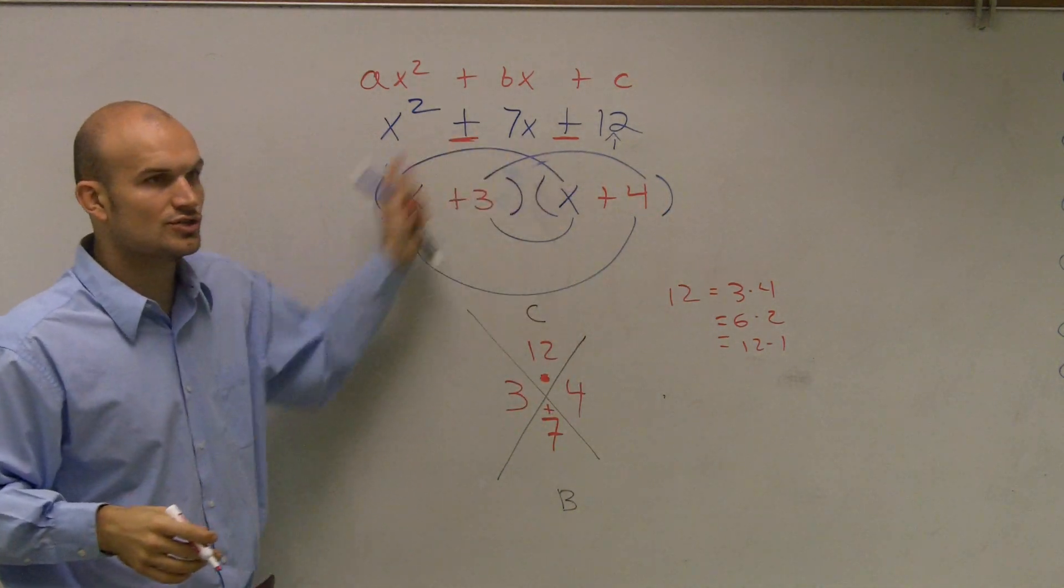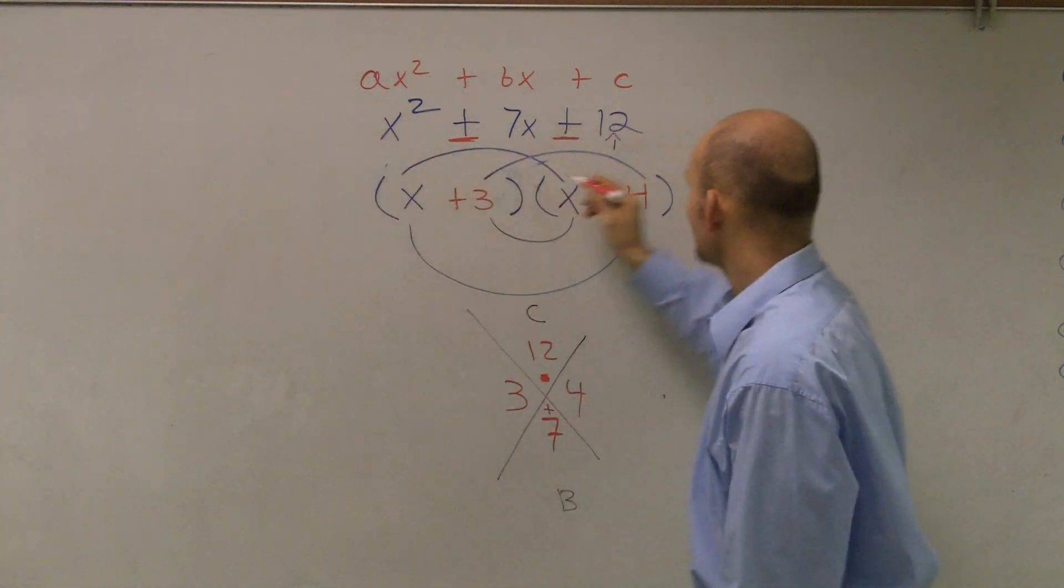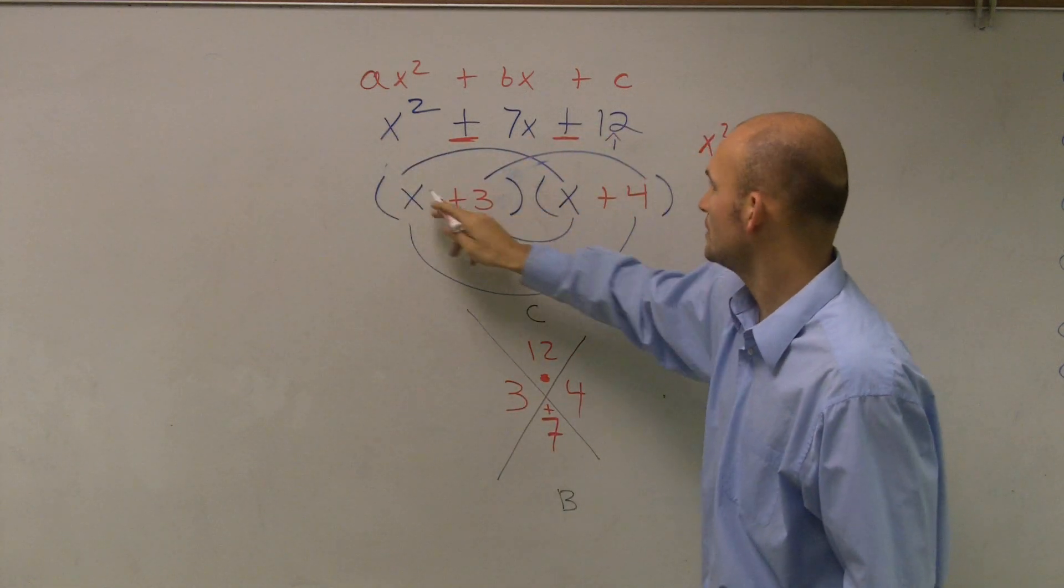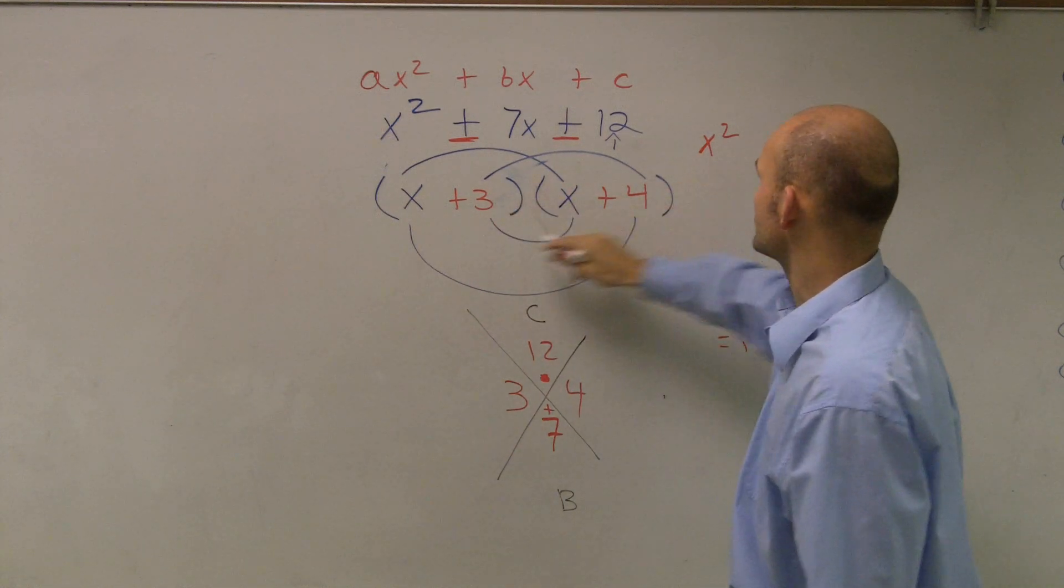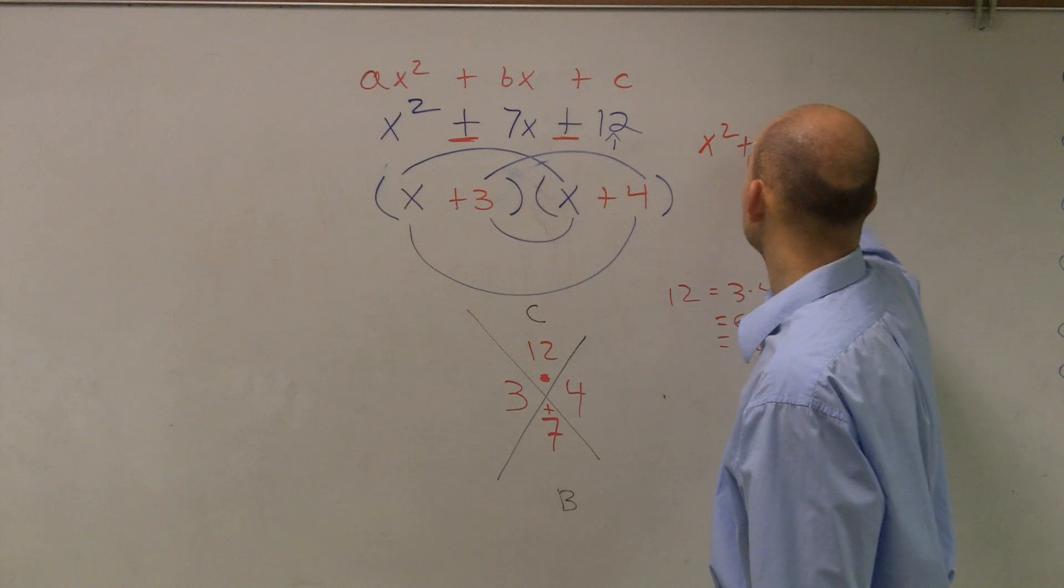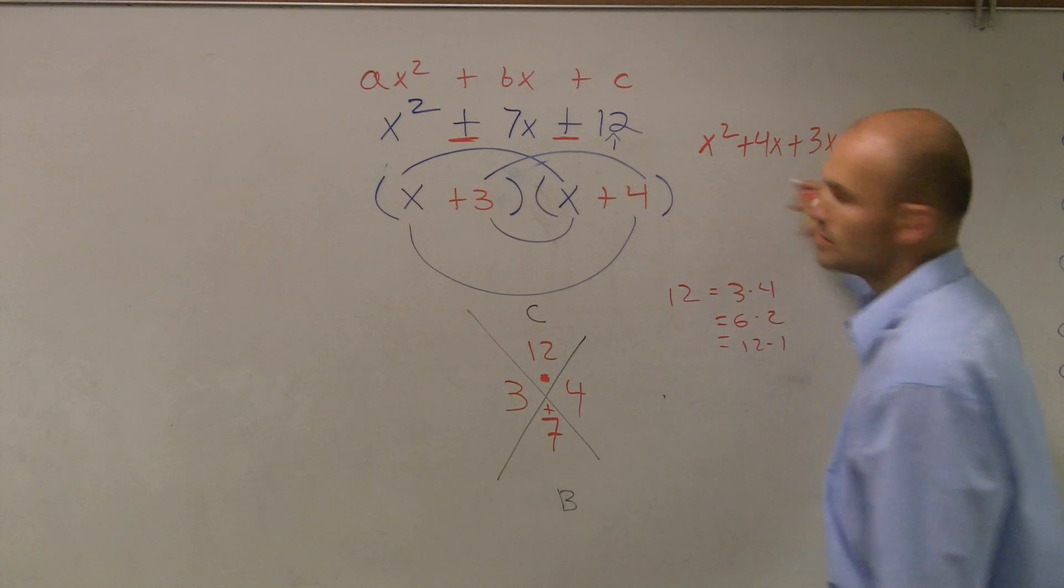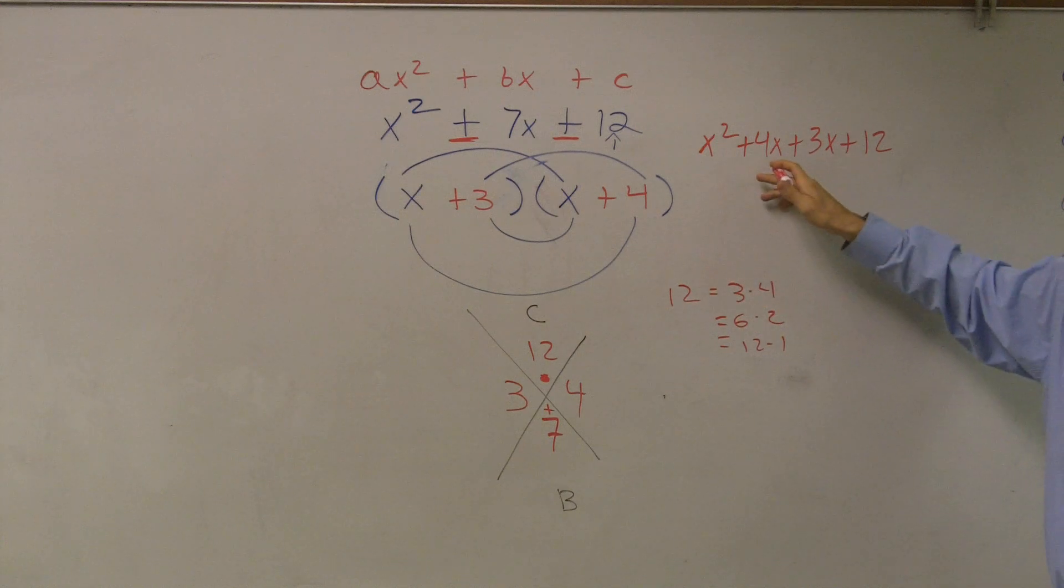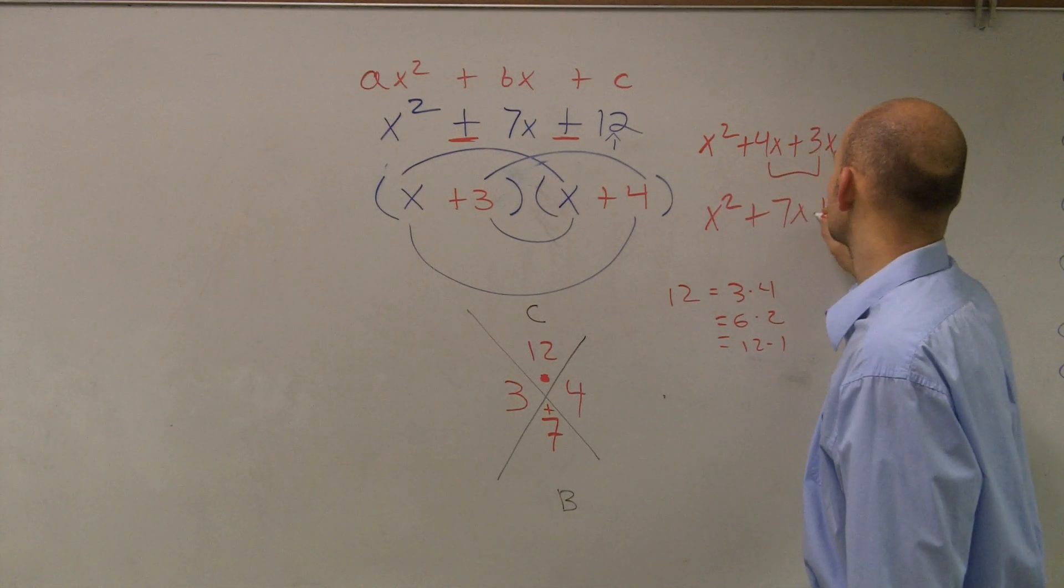Now, if you were to use your FOIL method and figure this out, you get x times x is x squared. Then x times 4 is 4x plus 3x plus 12. So if I did FOIL, I would get this, combine my like terms, x squared plus 7x plus 12.